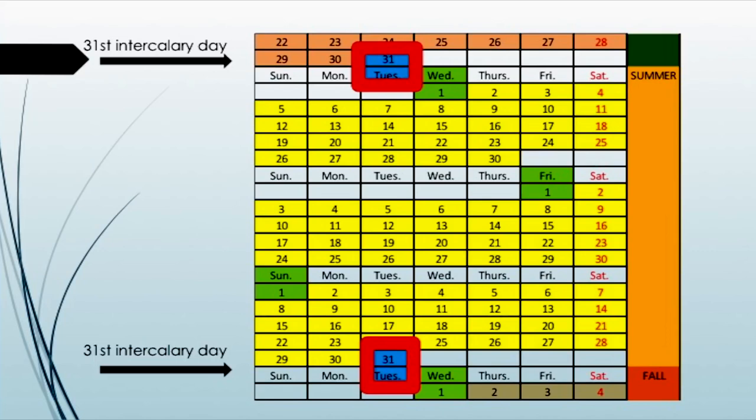Our intercalary day, the 31st day, occurs on the third day of the week — Tuesday in modern times. That 31st day moves the first day of summer to the correct place: Wednesday. You'll see that four days later — Wednesday, Thursday, Friday, Shabbat — the fourth day is the Sabbath.